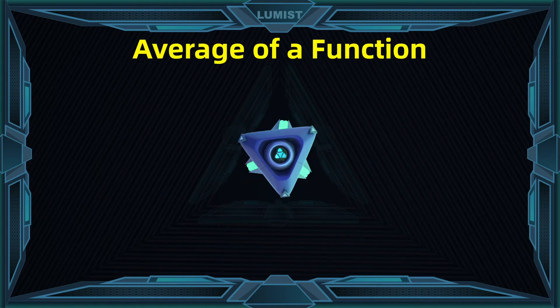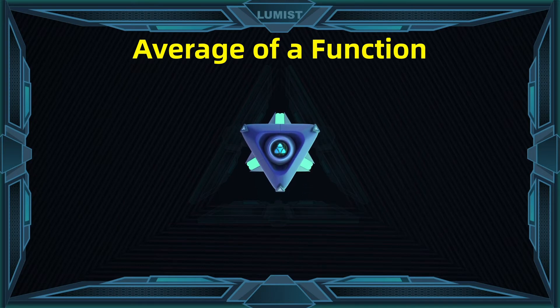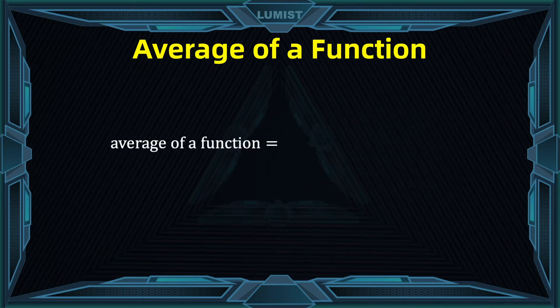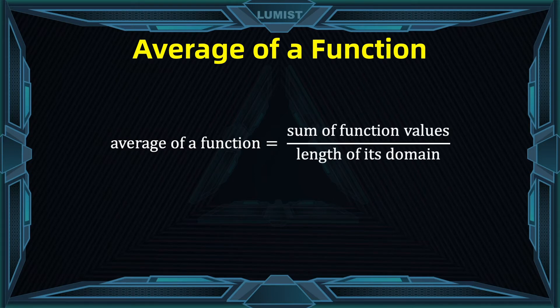We can generalize this idea. If we are given any function, then the average of a function is the sum of the function values divided by the length of its domain. In our case, the length of the domain is the number of days. In that case it was 7.